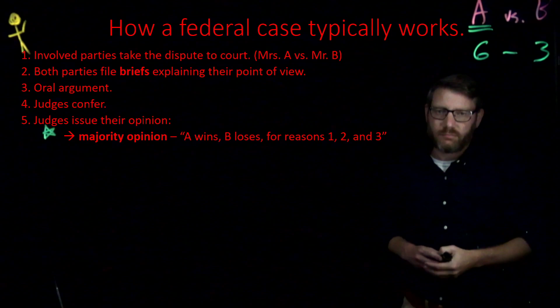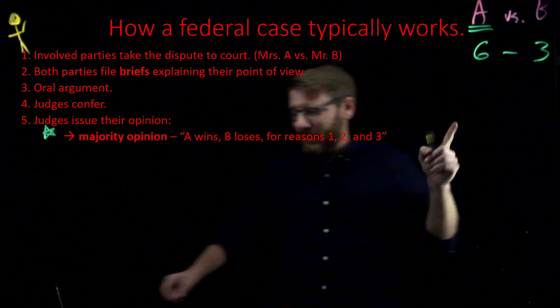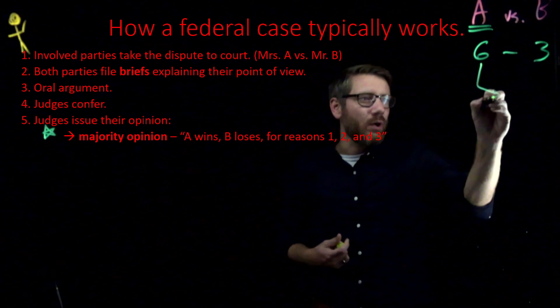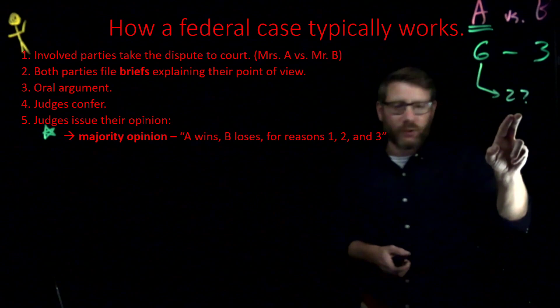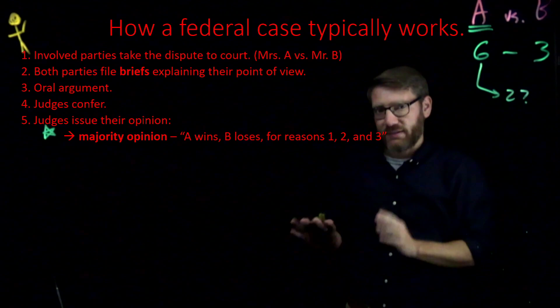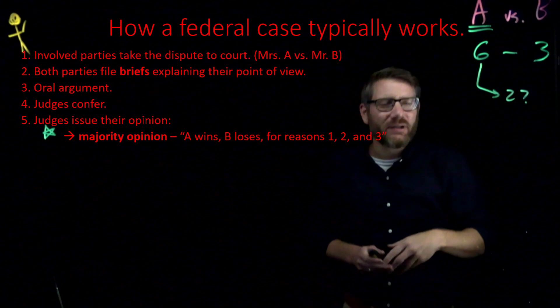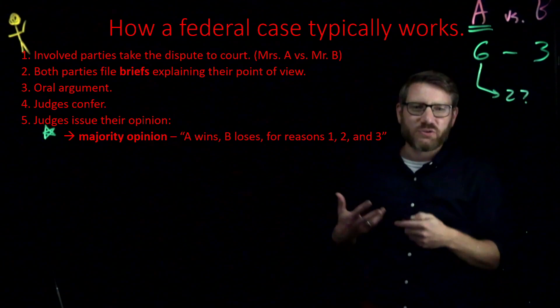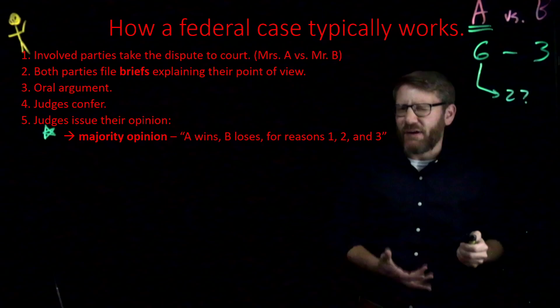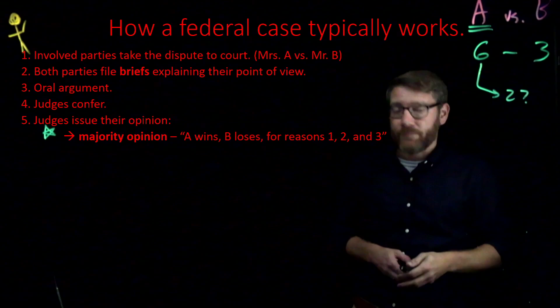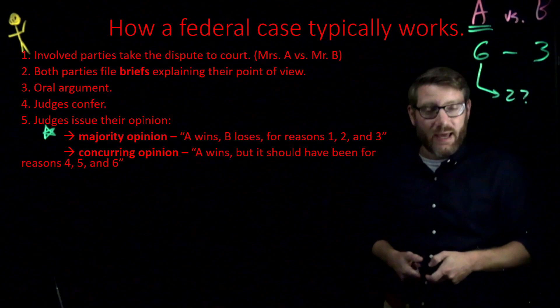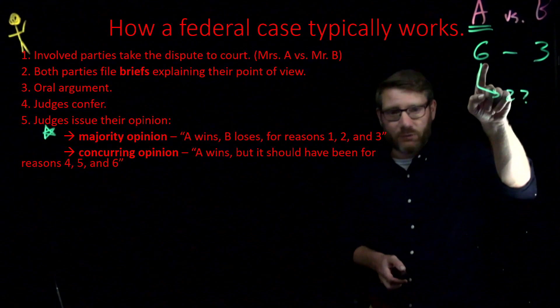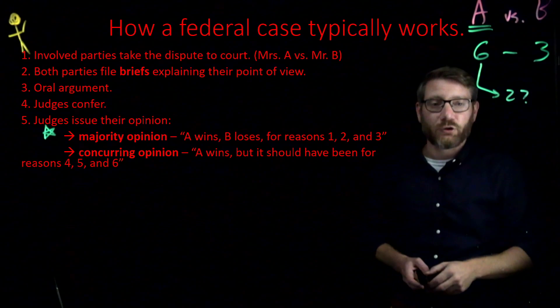The majority will say 'A wins, B loses,' and then list the reasons why — which is important because it guides future cases. Now it's possible that one or two of the six majority judges agree that A should win and B should lose, but perhaps reasons one, two, and three weren't very convincing to them. Maybe A should have won because of reasons four, five, and six instead. If those judges feel that way, they can issue their own opinion called a concurring opinion.